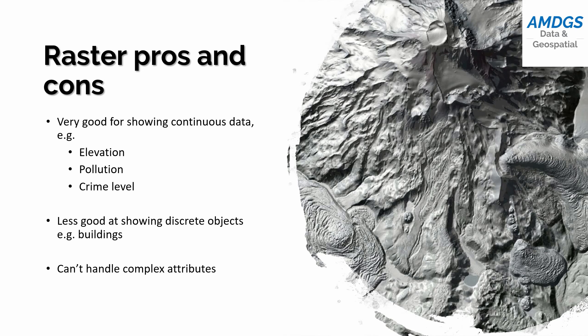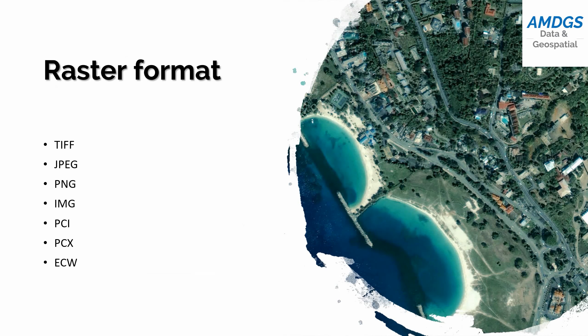That's where our other type of data — vectors — is more powerful. On formats: basically anything you've come across as an image file is a raster file. So JPEGs, PNGs, IMG, TIFF files — there are a few more esoteric formats unique to GIS and remote sensing as well. But basically, if you know it's an image, then it's a raster file.